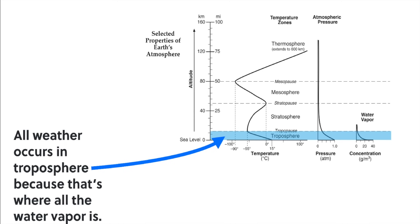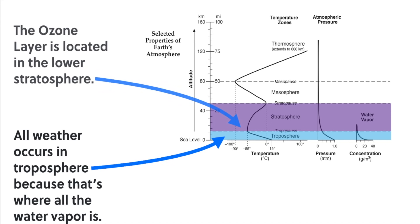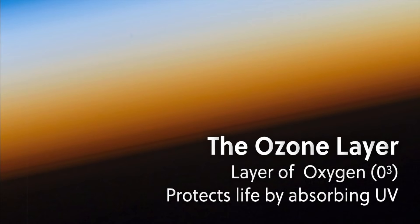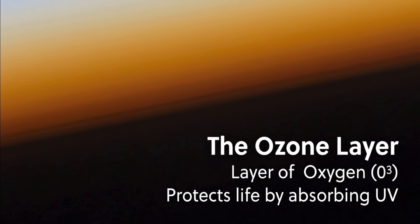The layer above the troposphere, called the stratosphere, is where we find the ozone layer. Now, what exactly is the ozone layer? Well, it's very important to humans on Earth. It's essentially a layer of oxygen, specifically O3. And what it does is protects all living things on Earth by absorbing harmful ultraviolet rays coming from the sun.